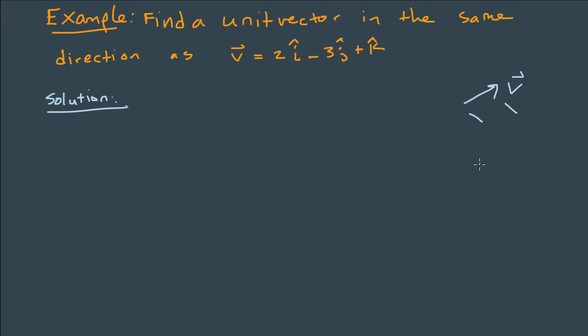So what we can do is we can take that vector and we can divide it by its magnitude and that produces a unit vector in the direction of the original vector.